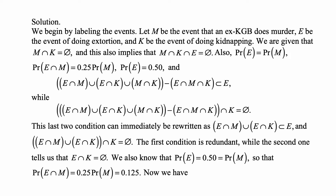These last two conditions can be rewritten as: (E ∩ M) ∪ (E ∩ K) is a subset of E — which is redundant — and (E ∩ M) ∪ (E ∩ K) intersected with K is empty, which tells us that E ∩ K is empty. We also know P(E) = 0.50 = P(M), so P(E ∩ M) = 0.25 · 0.50 = 0.125.